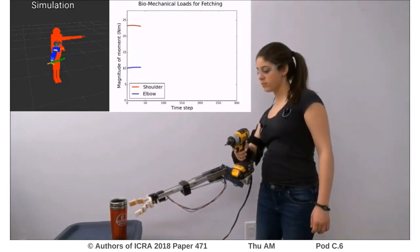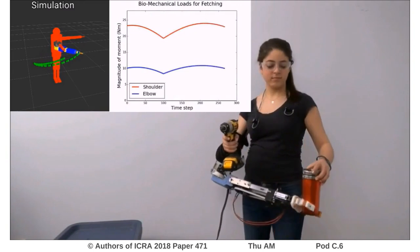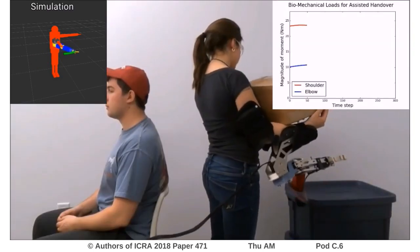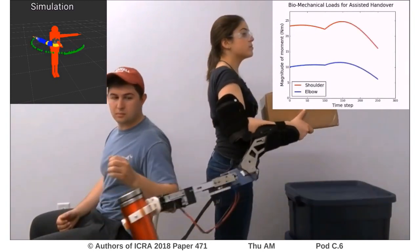Here are some indicative use scenarios, such as fetching an object from below the user, shown along with load graphs and simulations. The second task is assisted handover of an object to a person who is behind the user.